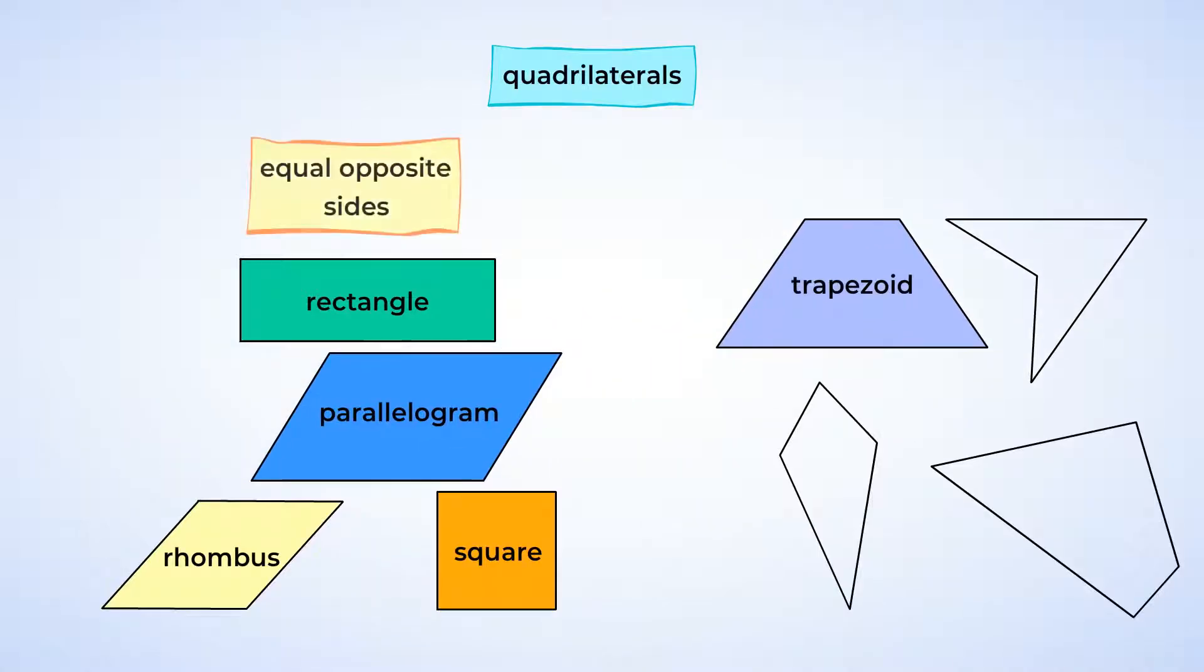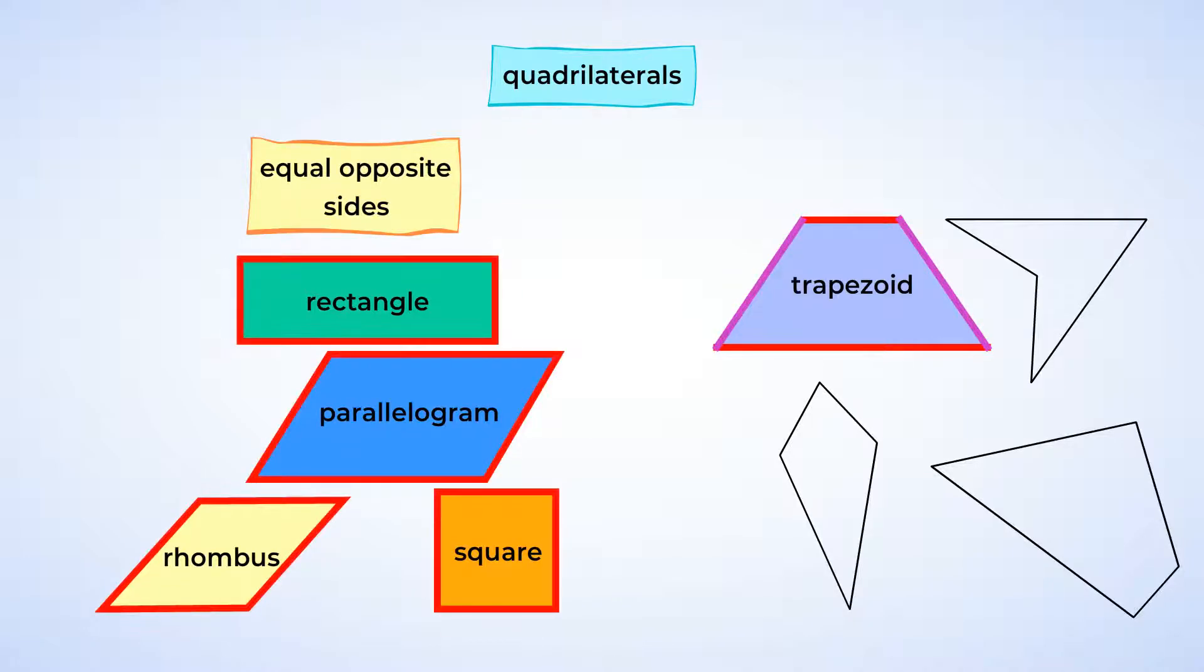Look, the trapezoid is no longer with the other shapes. A trapezoid may have parallel sides, but it does not have opposite sides that are equal just like the parallelogram, rectangle, rhombus, or square.